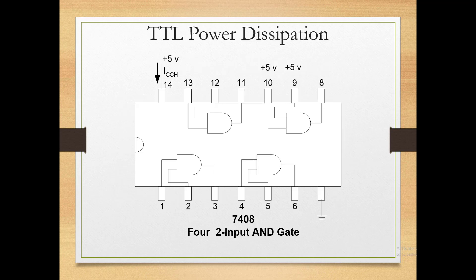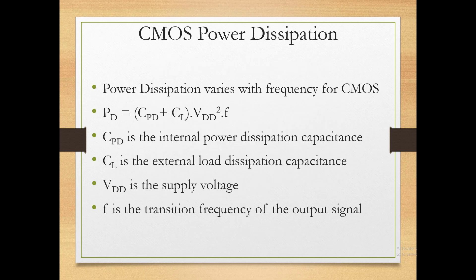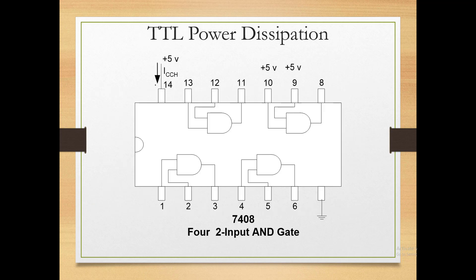TTL power dissipation is calculated in this manner. For CMOS, it is somewhat different — on each gate, some voltage is applied, and the power dissipated depends on the technology. The TTL gate dissipates power according to its specifications.